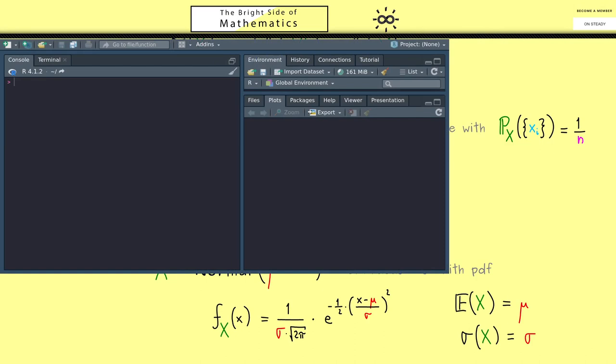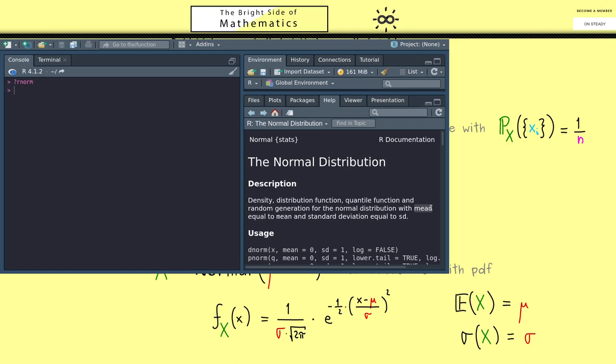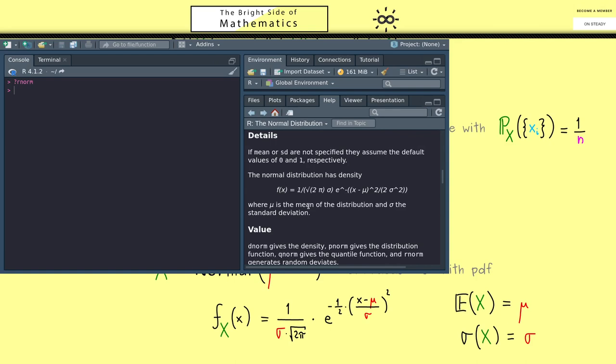To visualize this important normal distribution, let's open our studio. First, let's open the help function by typing ?rnorm. There we have everything about the normal distribution. You can see the mean is simply called mean, and the standard deviation is called sd. There, you also find the probability density function f_X, exactly the one we already know. Now we want to draw it, so we use the term dnorm.